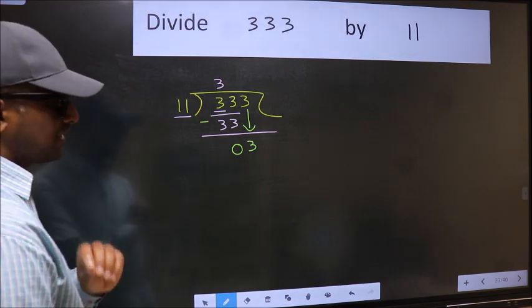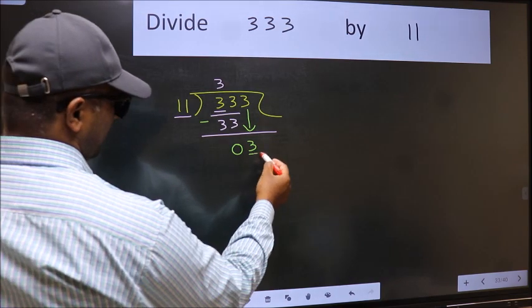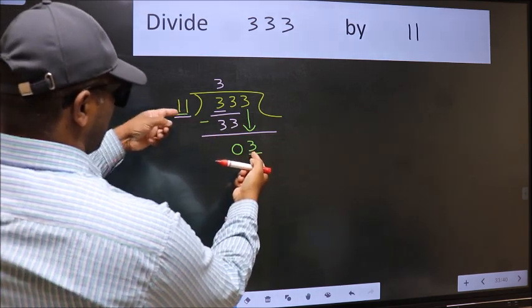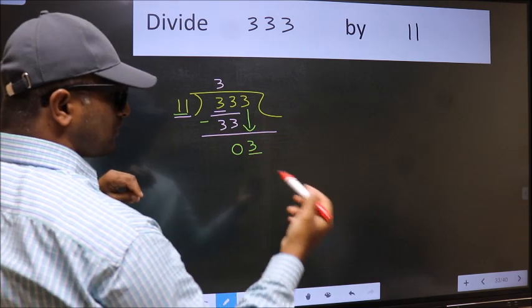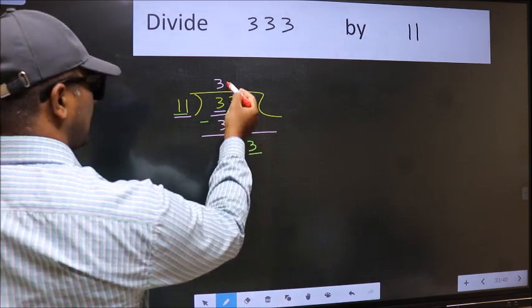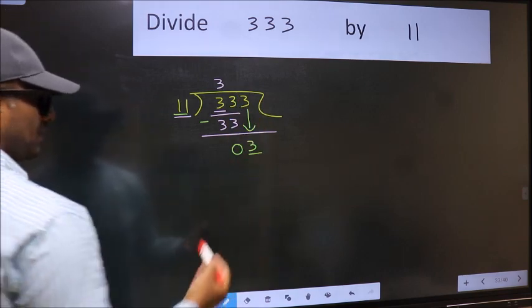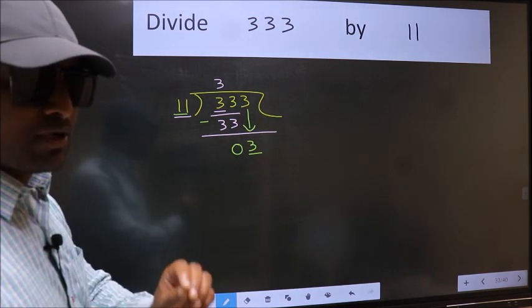And the mistake is this. Here we have 3, and here 11. 3 is smaller than 11. So what many do is they directly put a decimal point and take 0, which is wrong.